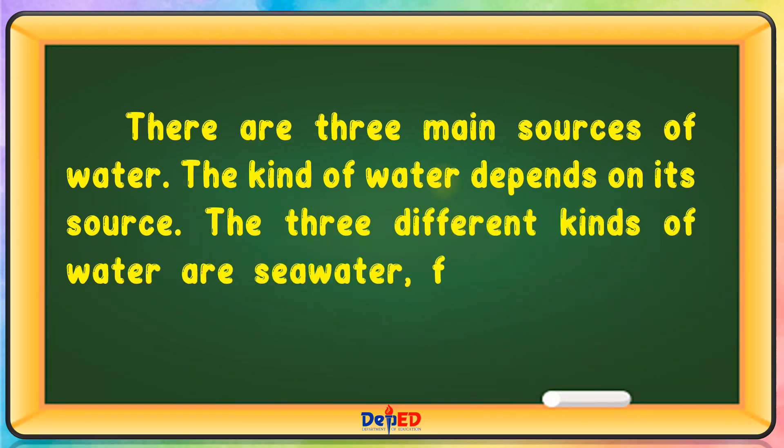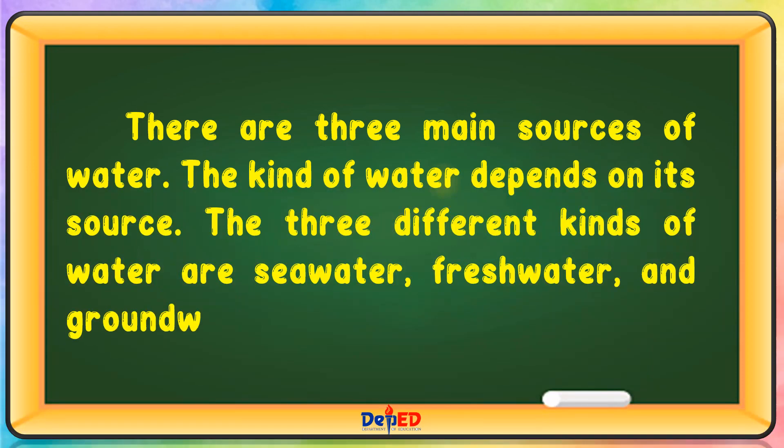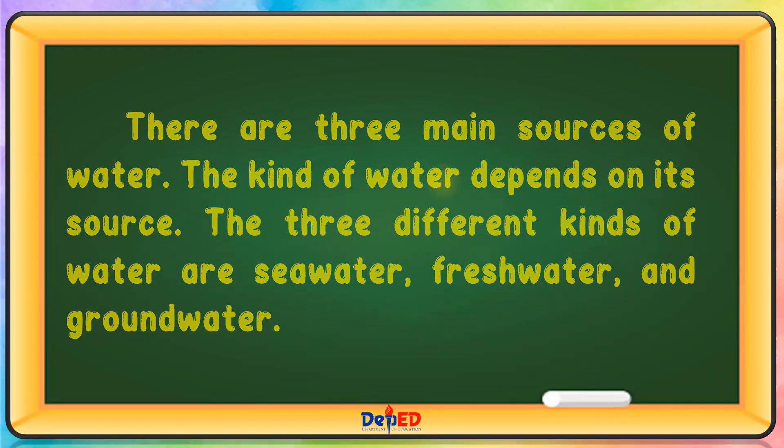The three different kinds of water are sea water, fresh water, and ground water.